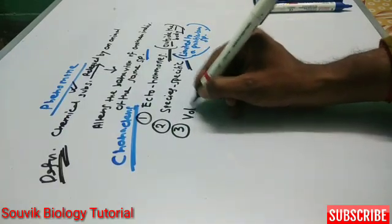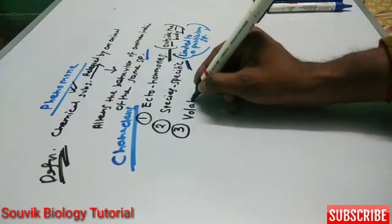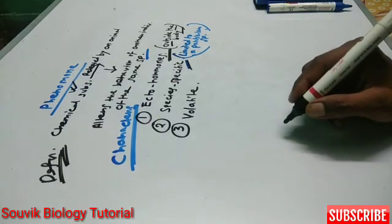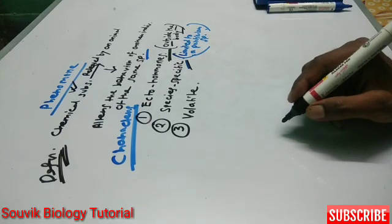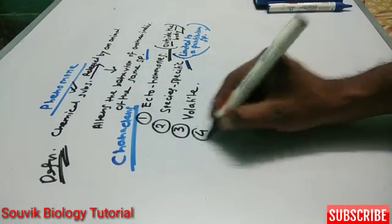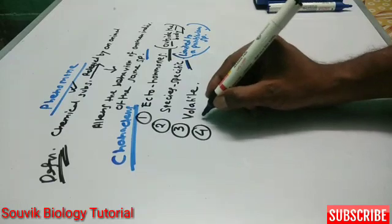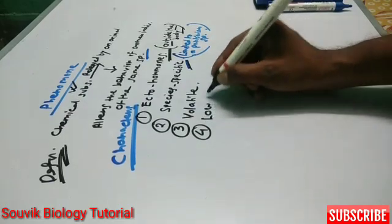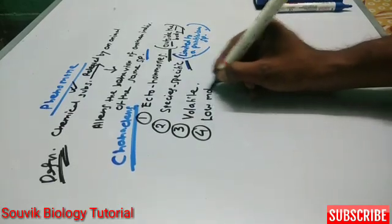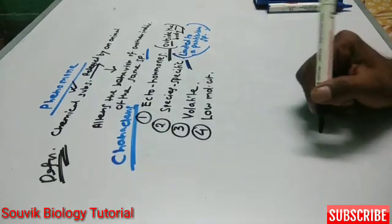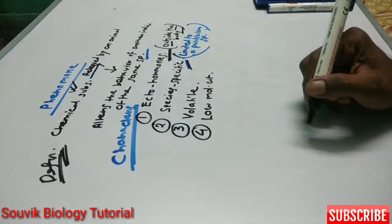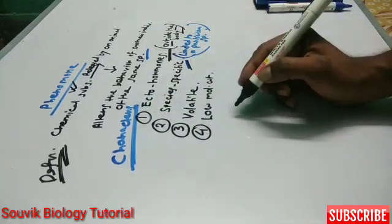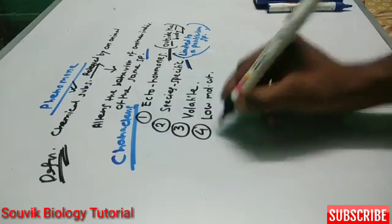Number three: pheromones are volatile in nature. Also, pheromones are of very low molecular weight — that means pheromones have very low molecular weight. These are important points.